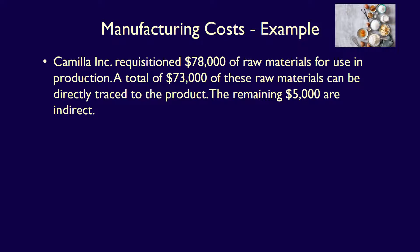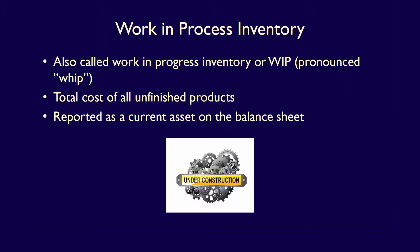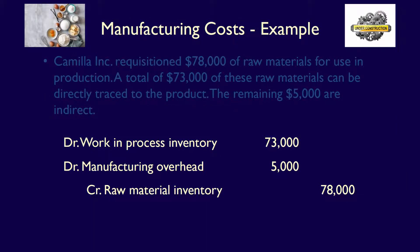The remaining $73,000 was determined to be direct materials and recorded into work in process inventory. Work in process inventory — sometimes called WIP — is the total cost of all unfinished products currently moving through the manufacturing process. It's accounted for as a current asset on the balance sheet, where the company accumulates all manufacturing costs for products currently being manufactured. We would debit work in process inventory for the direct materials of $73,000.